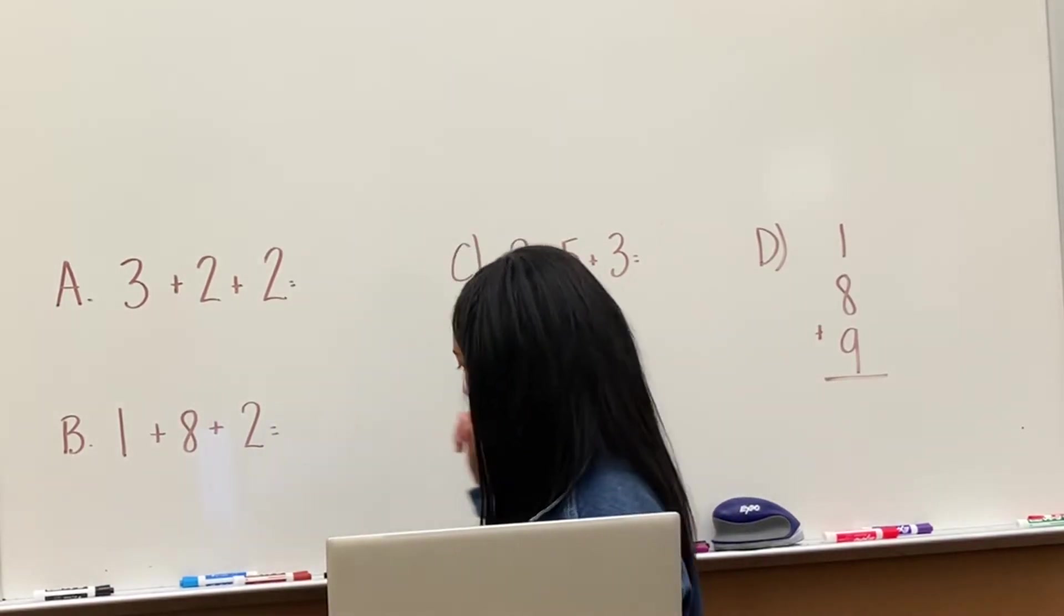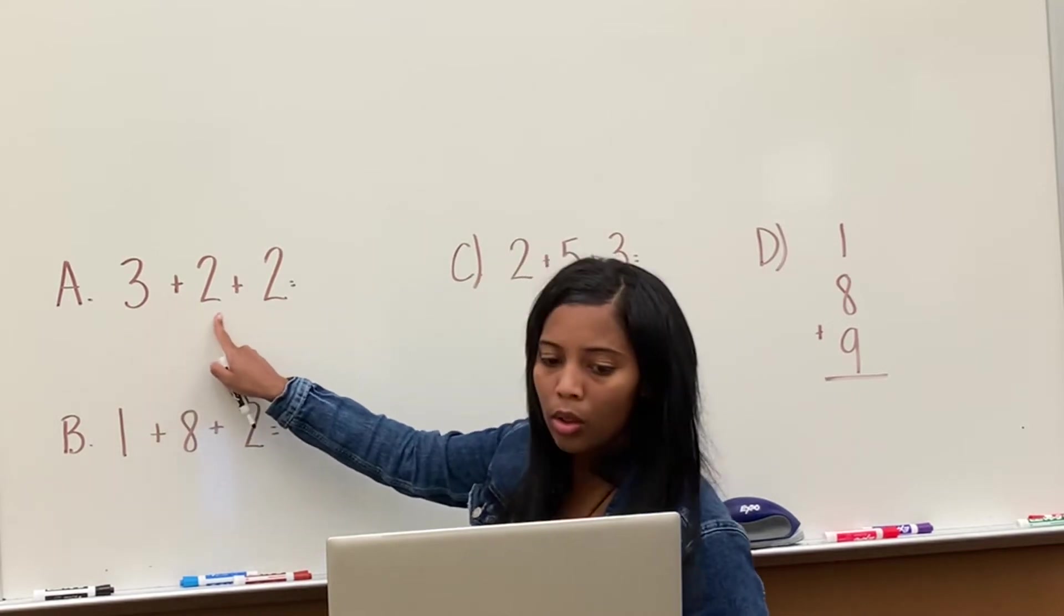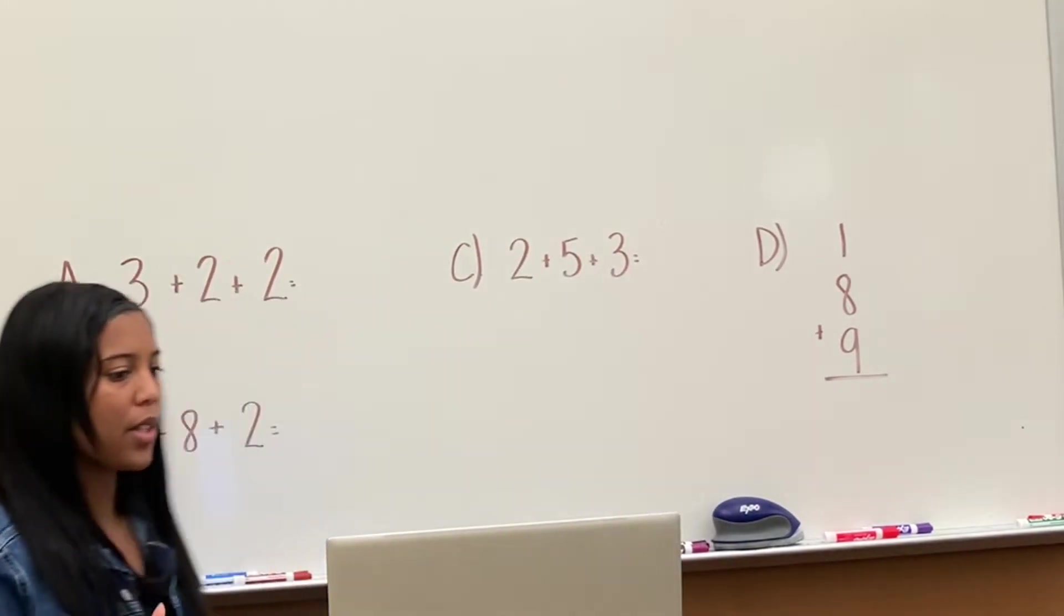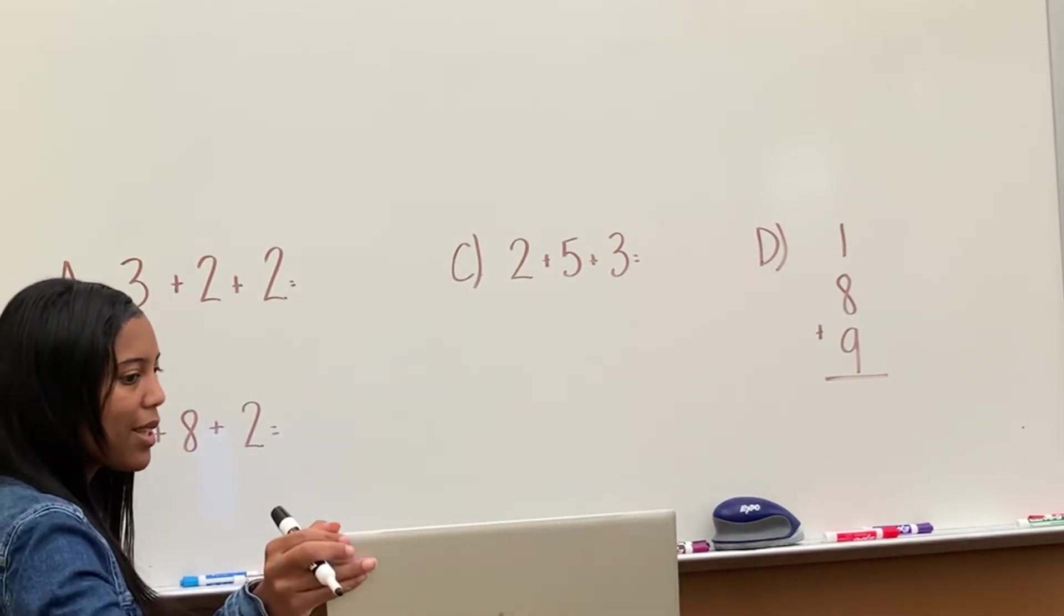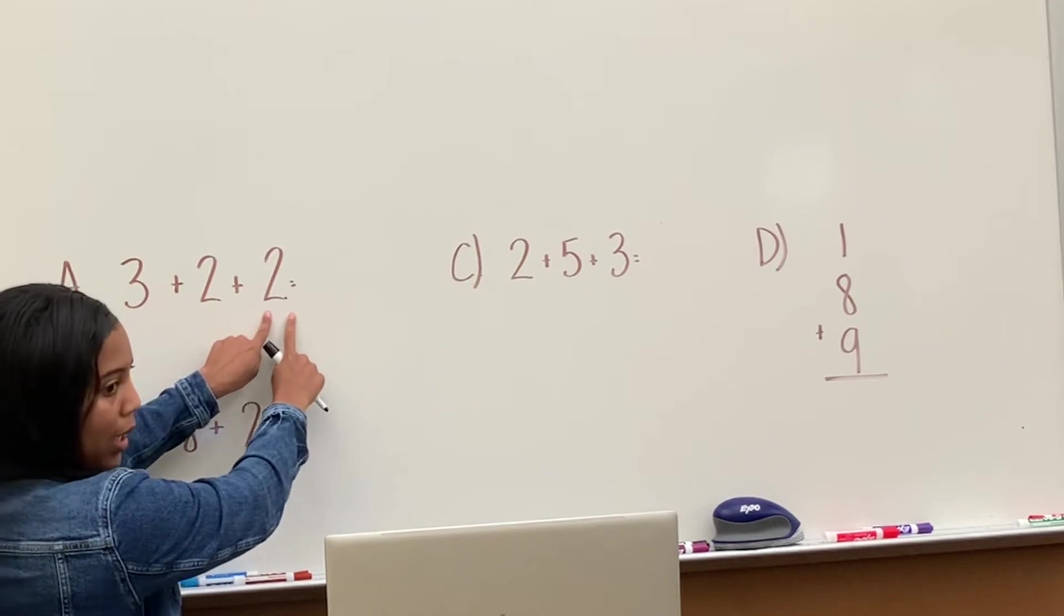Let's go ahead and look at the first one here, which is A. So we have 3 plus 2 plus 2. There are 3 numbers that we are going to add. Whenever we see 3 numbers, we always add our first 2 numbers first, then we add the last number.